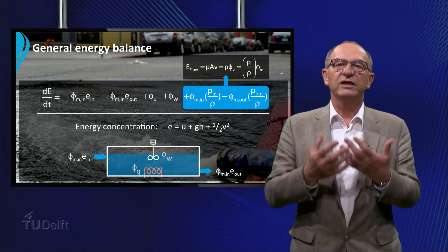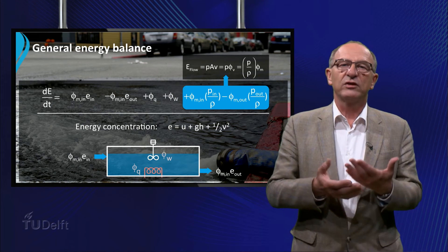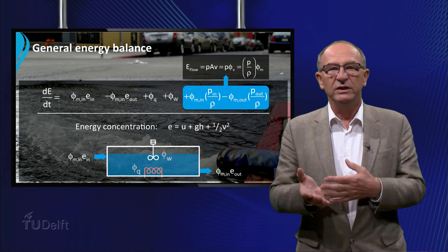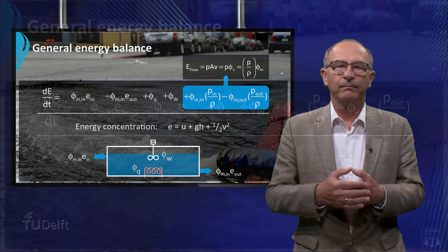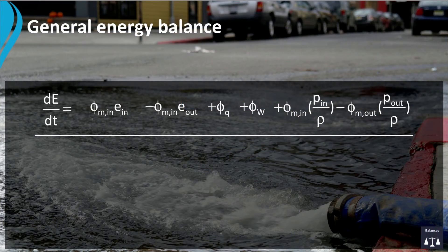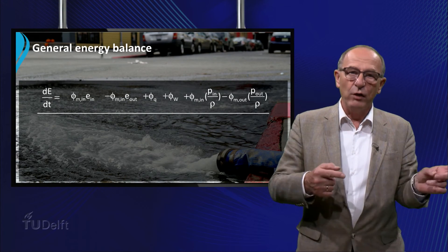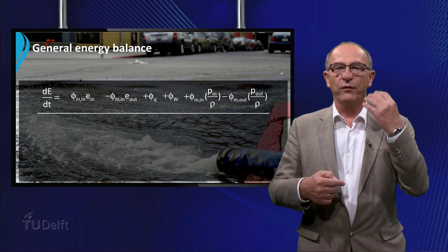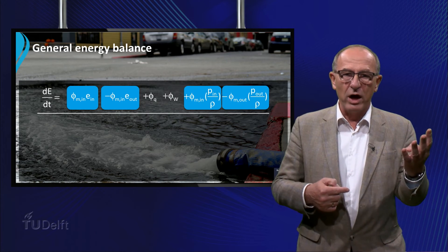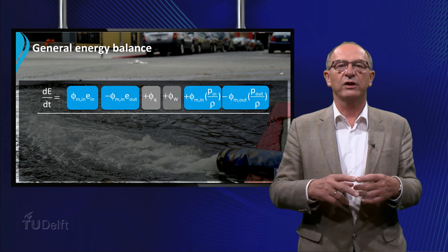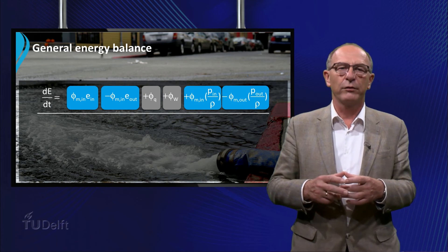In other words, this product can be written as the product of the pressure over the density and the mass flow rate. If we sum up all the terms of the energy balance for the considered volume, we obtain the following formula. The change of energy in a system with an inflow and outflow of fluid consists of four terms dependent on the mass flow rate and two terms which are not dependent on the flow rate.